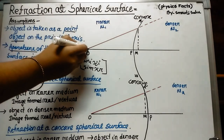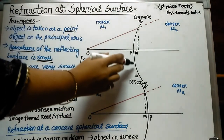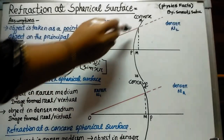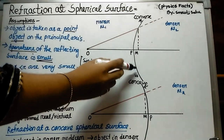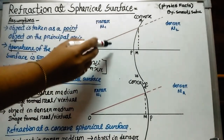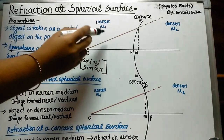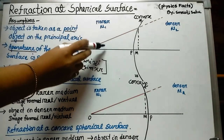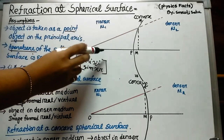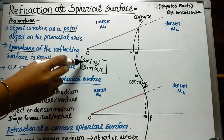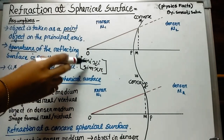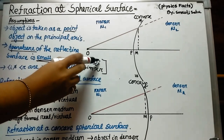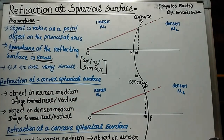So these three are the basic assumptions: the object is a point object, the aperture is very small, and because the aperture is very small, the angles produced by the incident and refracted rays are very small. Therefore, sin i is equivalent to i, and sin r and tan values are equivalent to r.